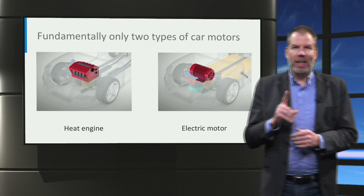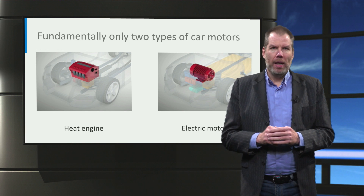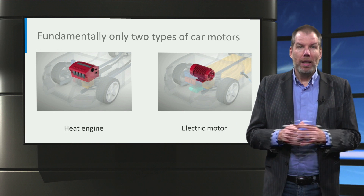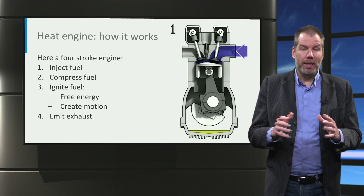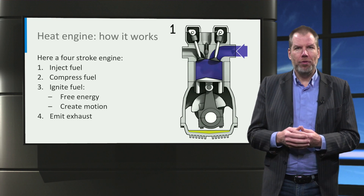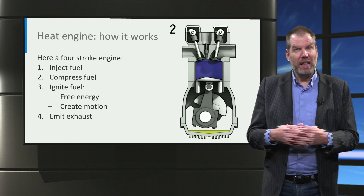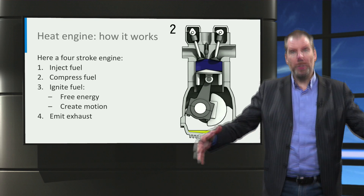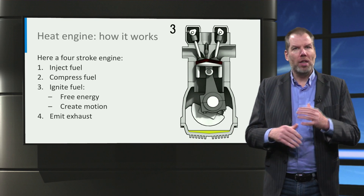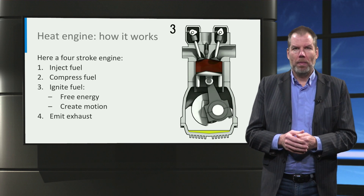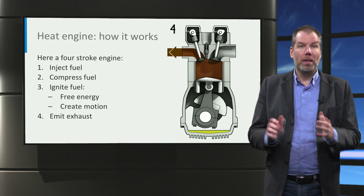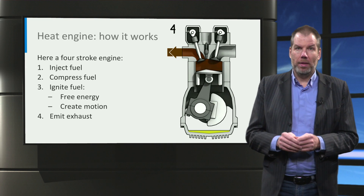The first motor is the heat engine, and the second one is the electric engine. In a heat engine, burning releases the potential chemical energy in a fuel. This heat produces expansion, and this in turn drives some mostly rotary motion. This is true for steam engines, Stirling engines, diesel engines, and gasoline engines.